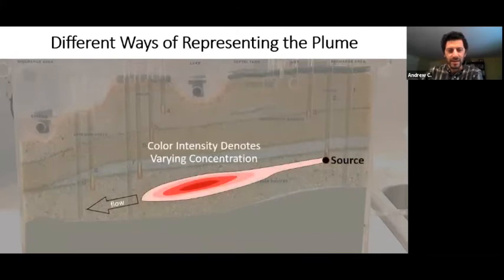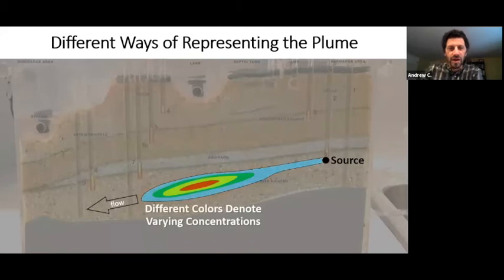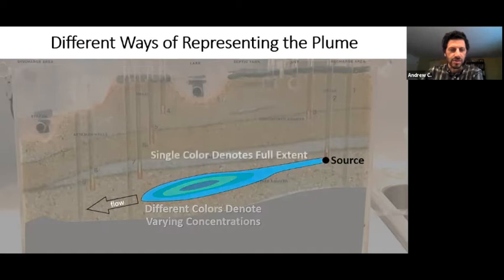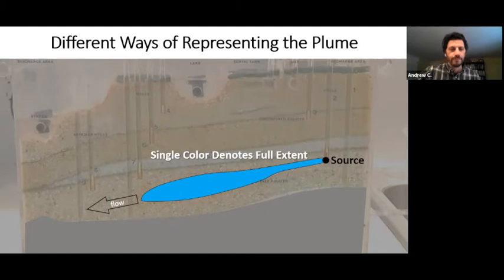As far as representing that phenomena which we cannot see, we do that in a couple of ways. One is to represent it with color intensity, where the color saturation denotes the variable concentrations — the darkest red represents the highest concentrations. We can also use different colors representing different concentration ranges, or sometimes just a single color denoting the full extent of the dye.